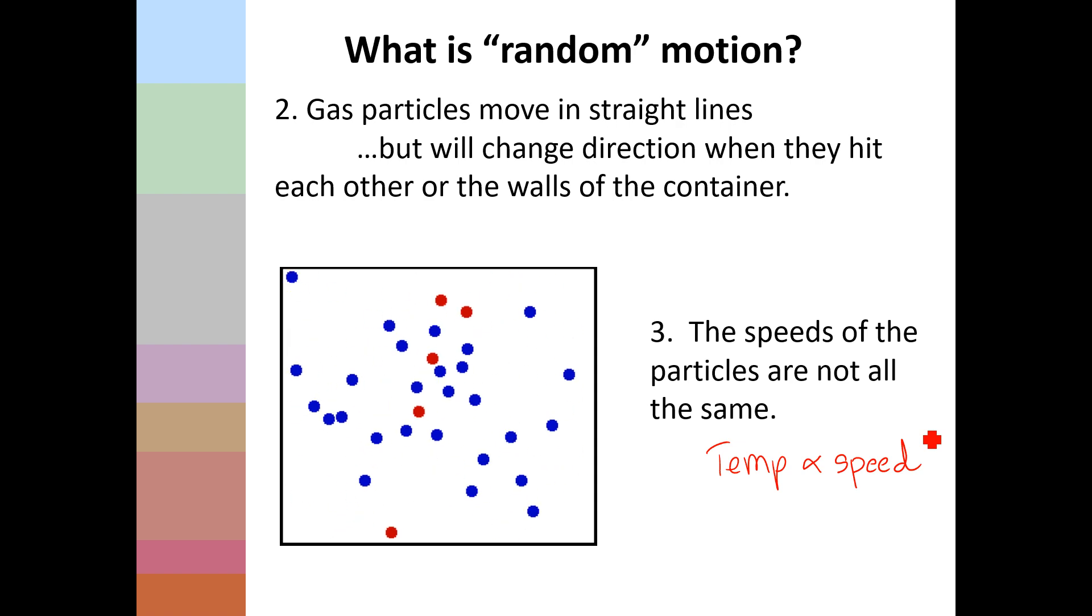But they're not all moving at the same speed—some are moving a little bit faster, some are moving a little bit slower. It turns out temperature is actually a measure of the average speed at which these particles are moving.